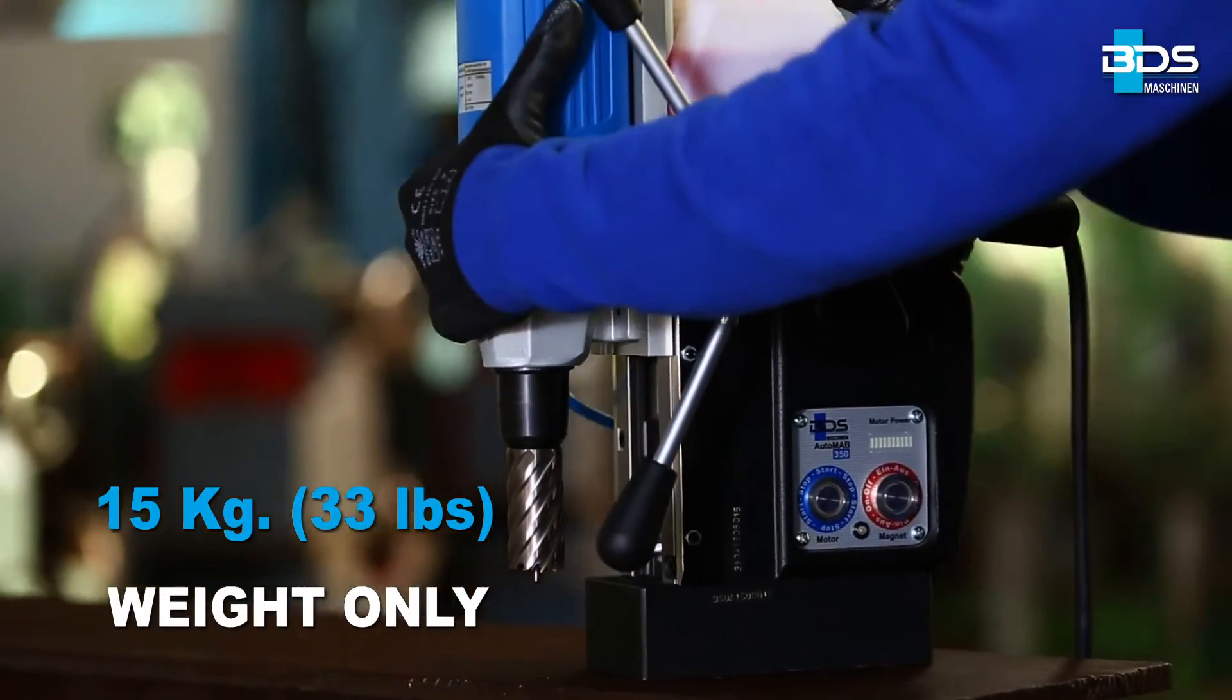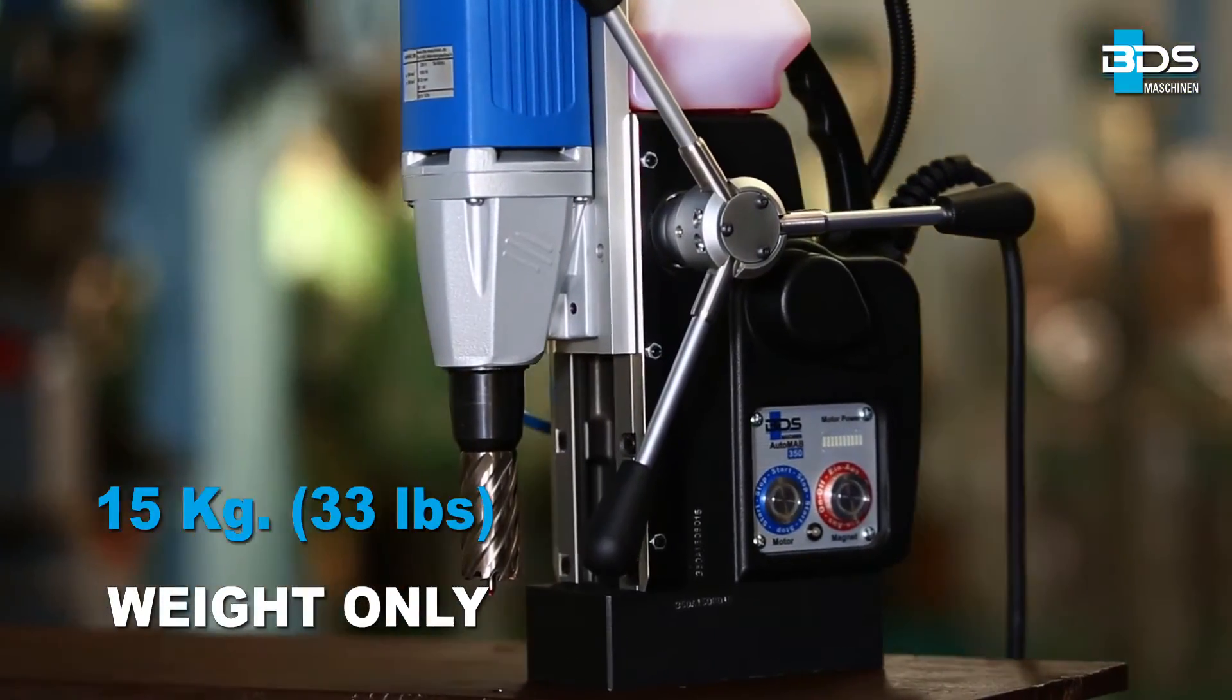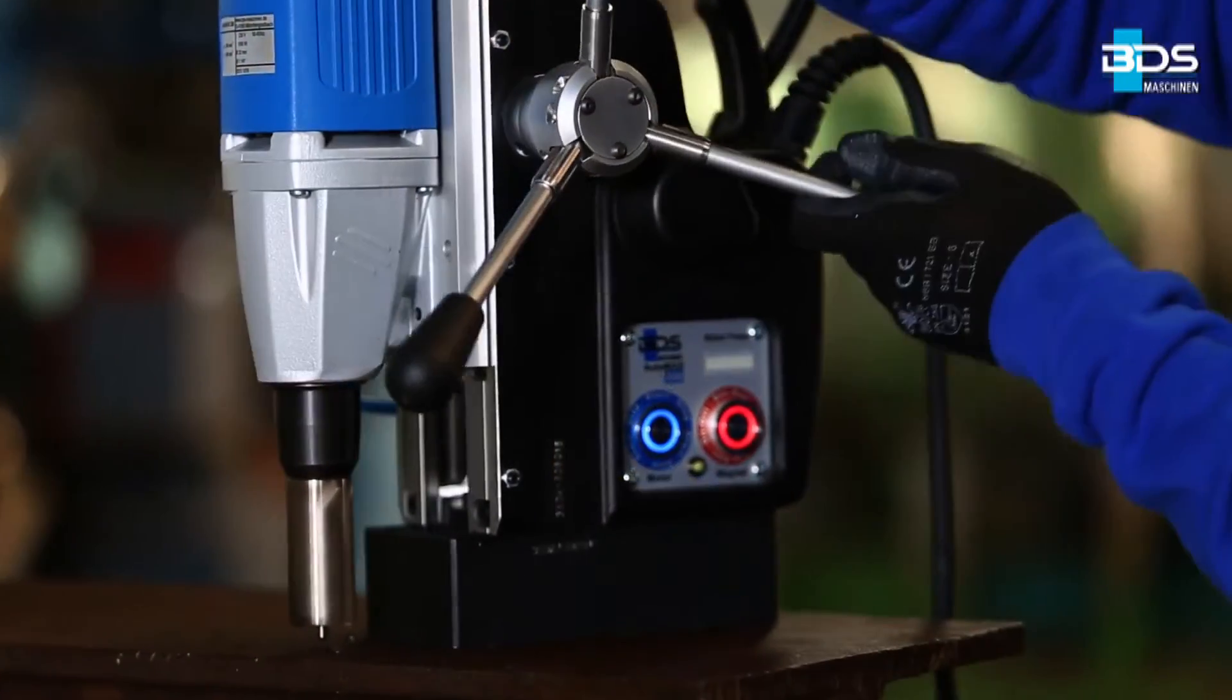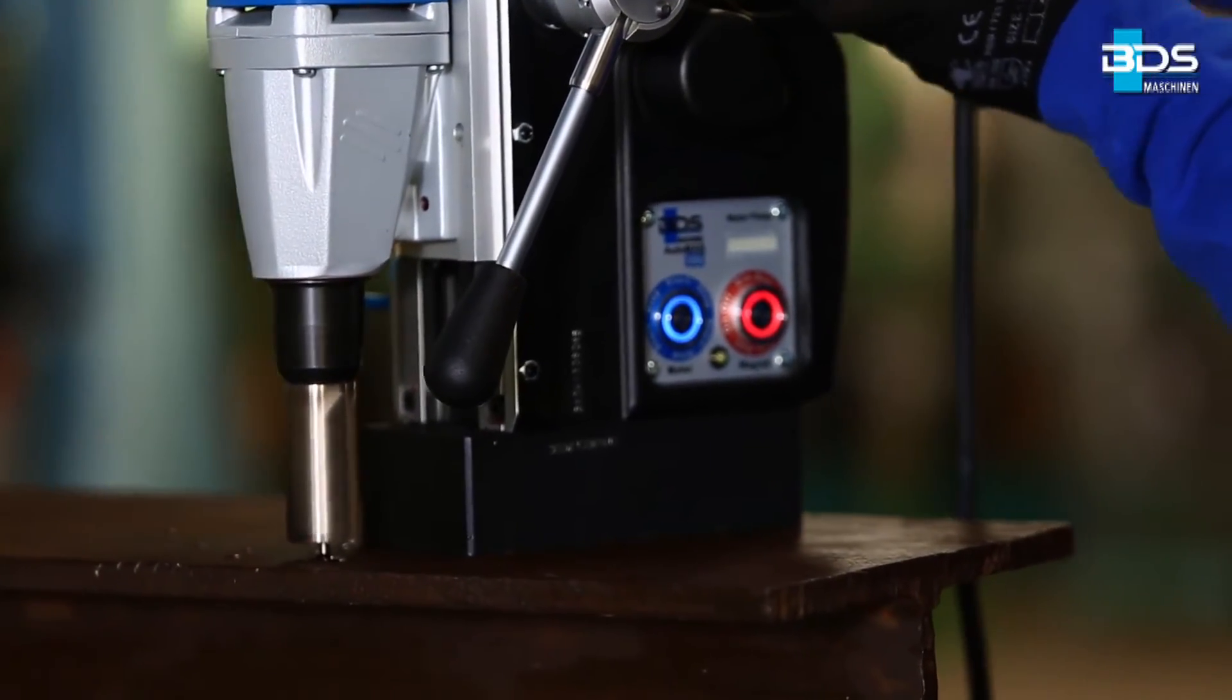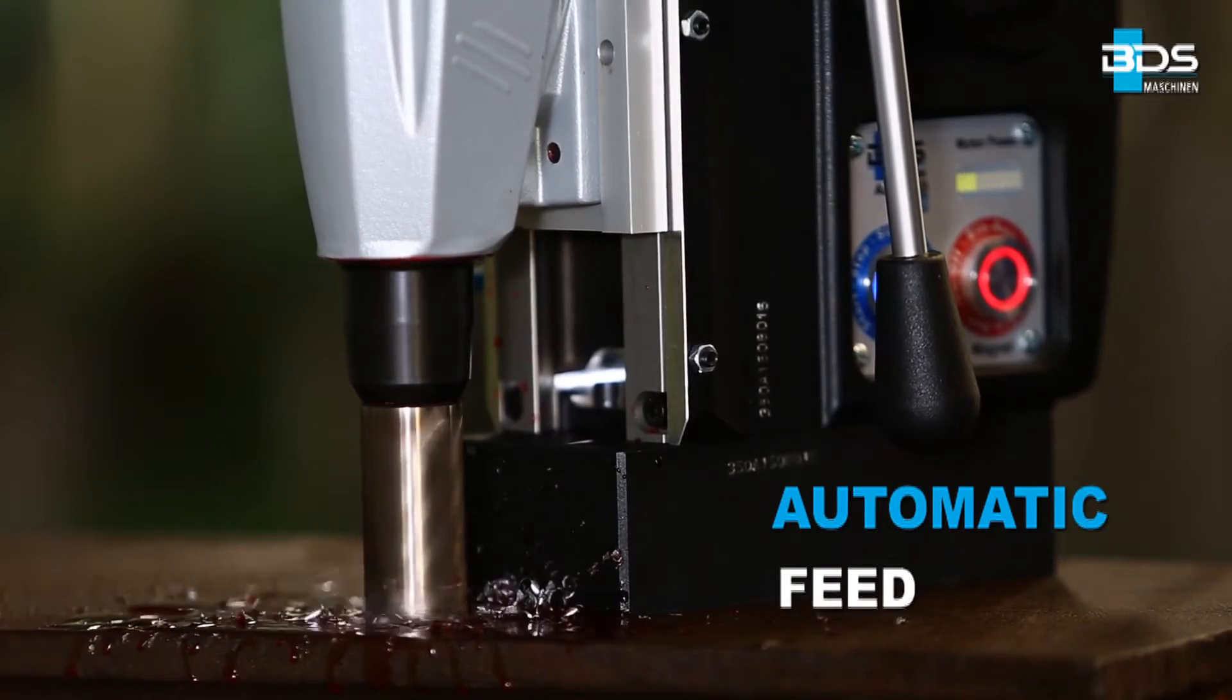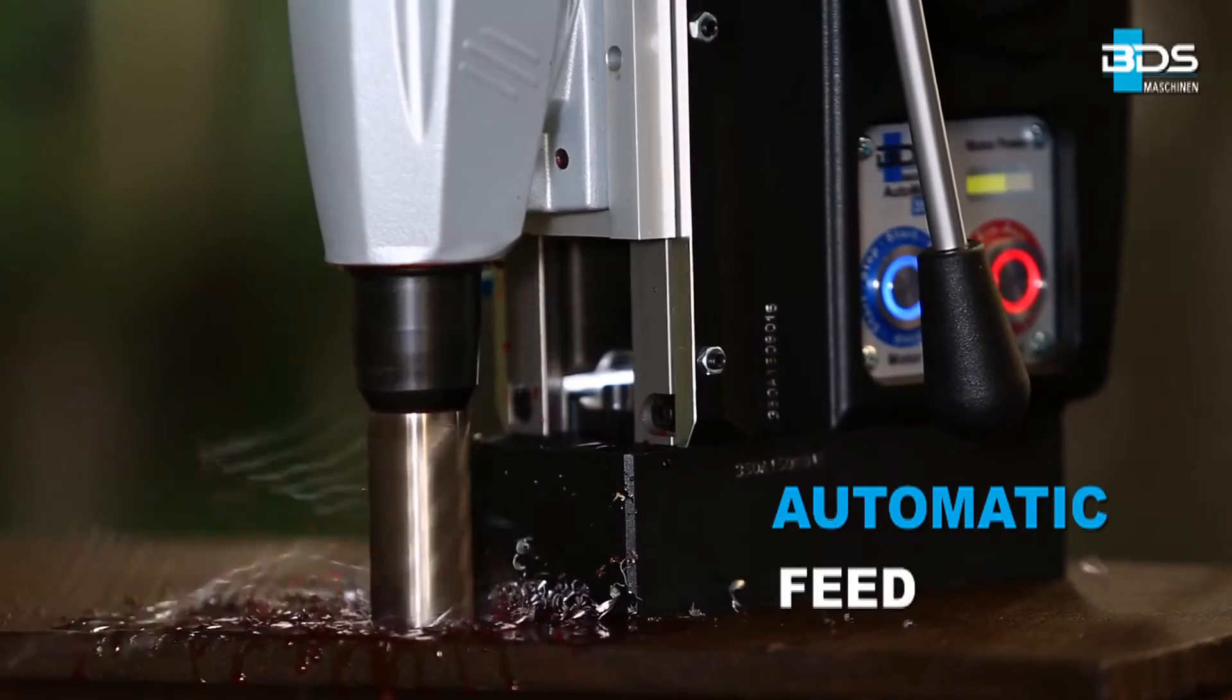The newly developed Automab 350 weighs just 15 kilos. After positioning the machine, switch on the motor and push back the feed handles to set the machine on automatic feed. The machine then proceeds to drill with automatic feed.